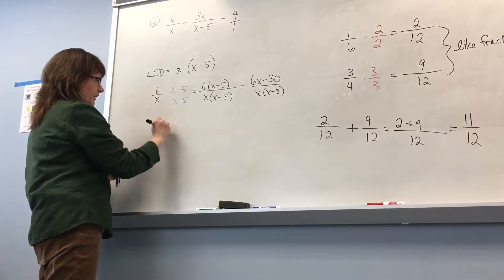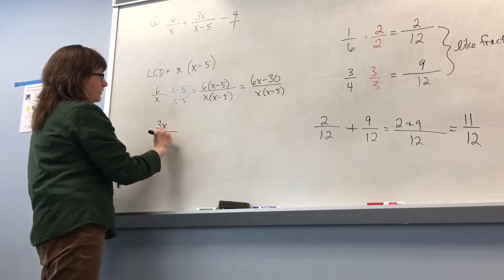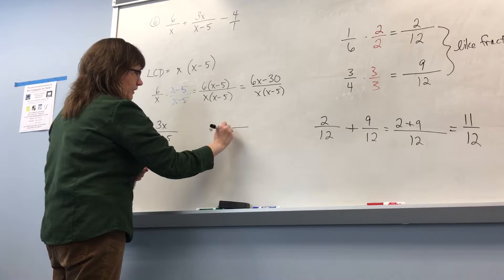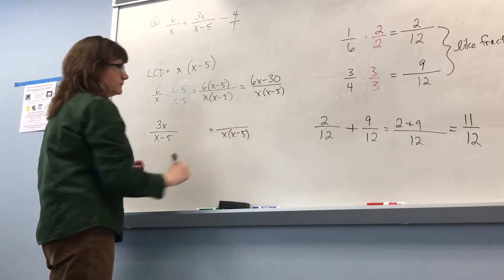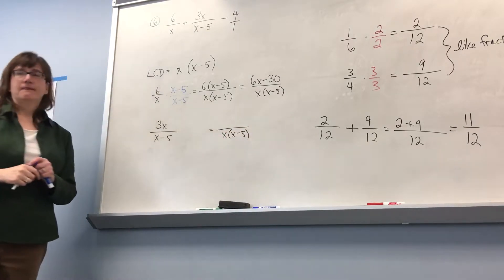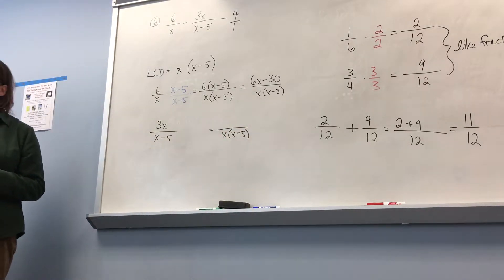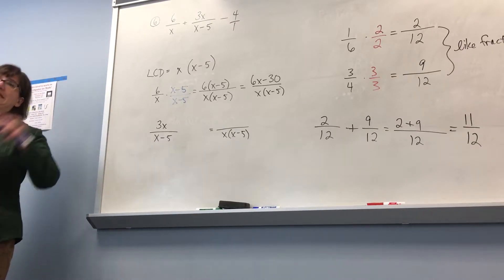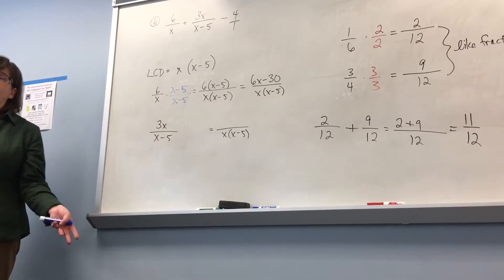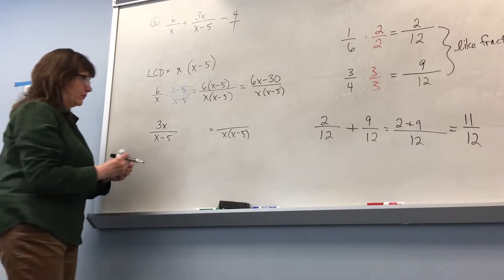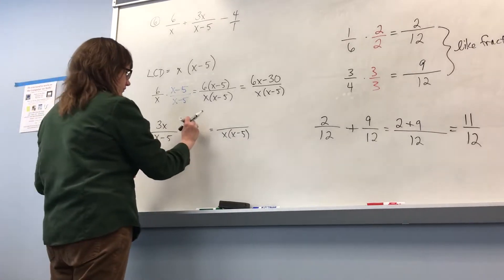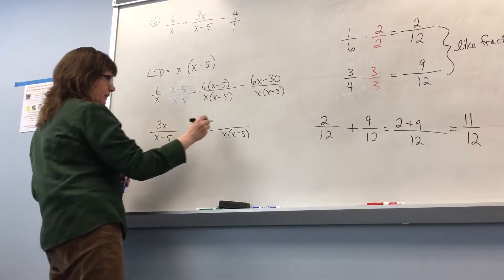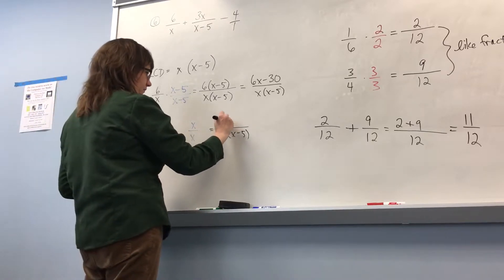Now my second fraction: I have 3x over x minus 5. Leave a space, write the denominator that I want. What do I multiply by this to get to what I want — what's missing? x. So I multiply by x over x. On the top I have 3x times x, which is 3x squared.